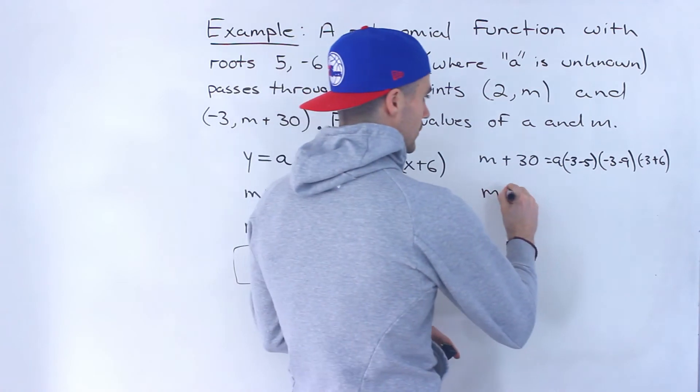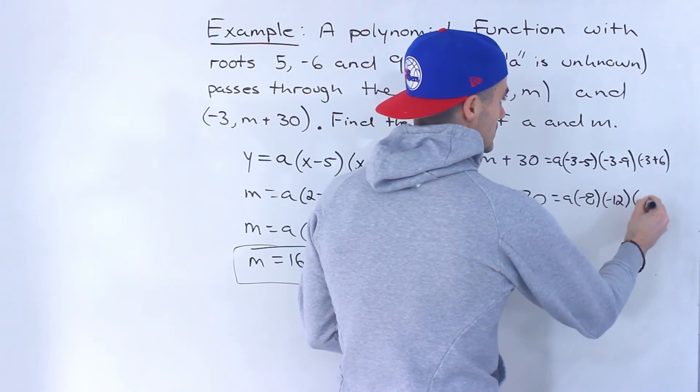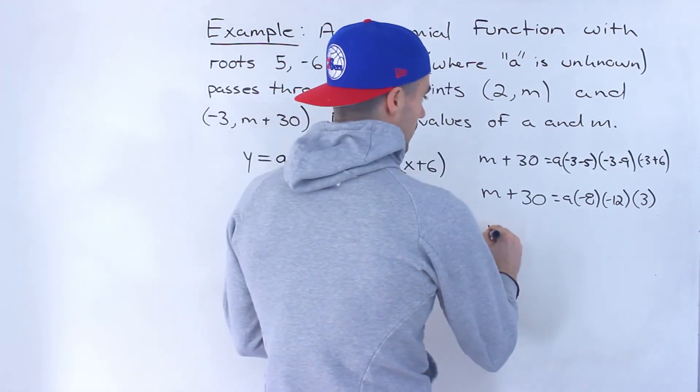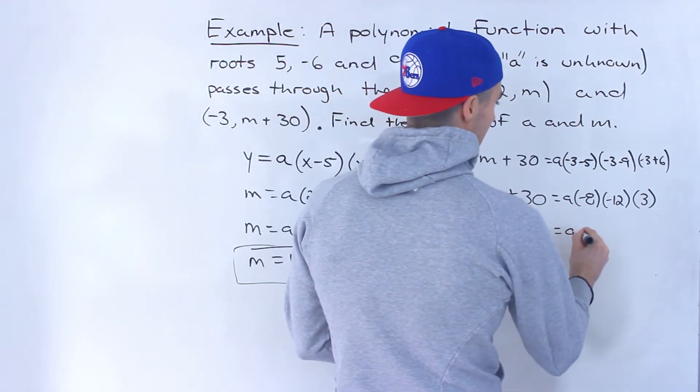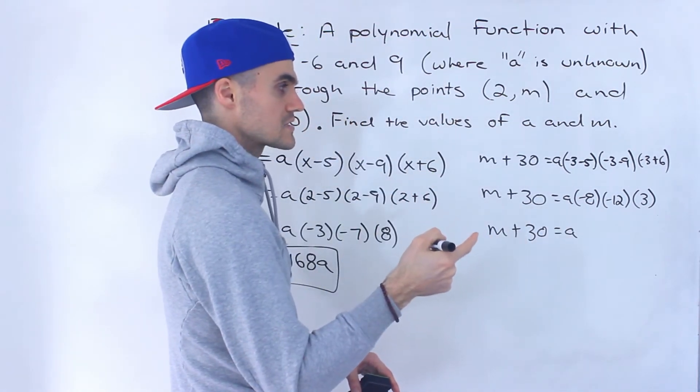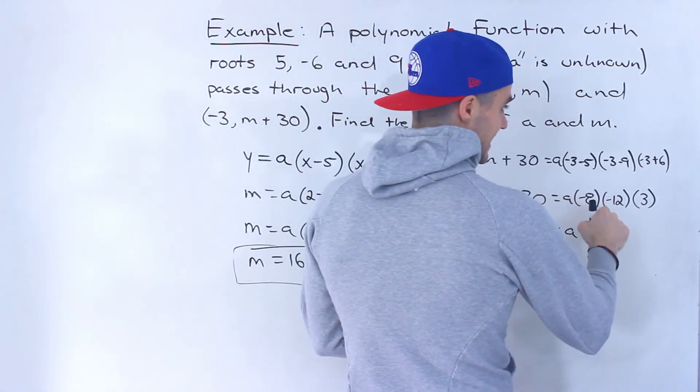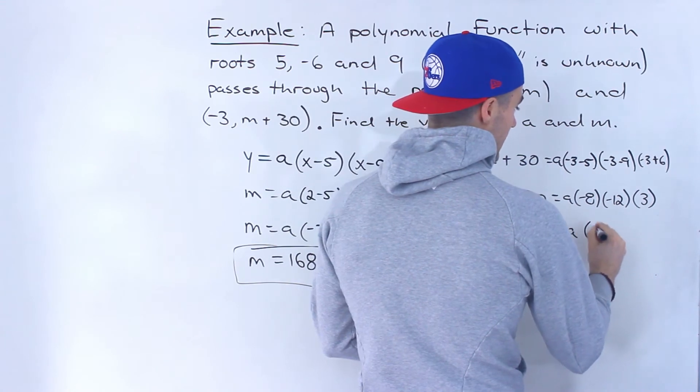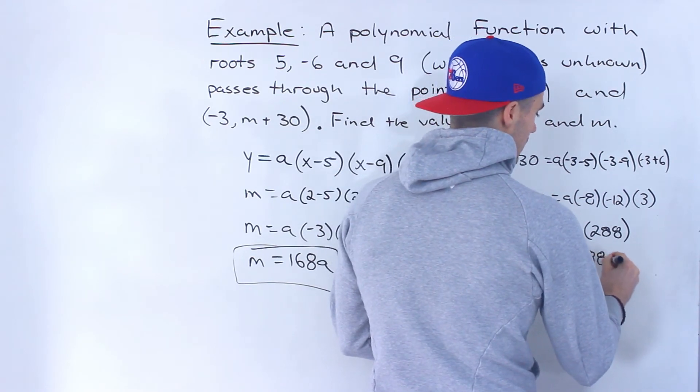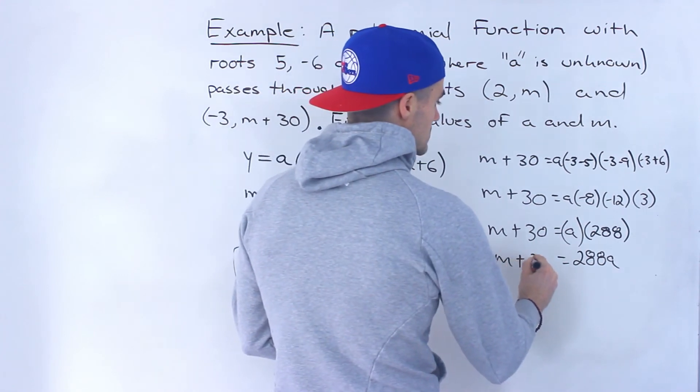Then over here we'll have M plus 30 equals A times negative 8 times negative 12 times positive 3. So what we would end up having is M plus 30 equals A. Negative 8 times negative 12 would give us positive 96. And then 96 times 3 would give us 288. So to make this look a little nicer this would be 288A. These two are multiplying still. And then we got the M plus 30.